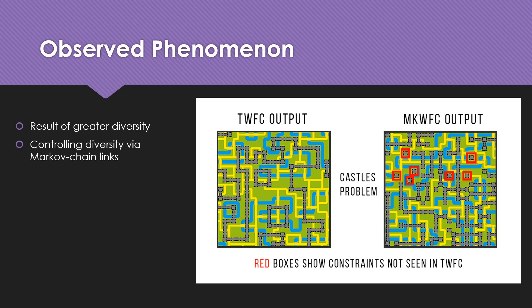By controlling Markov chain links, we can also control the diversity. We were able to prove that the Markov chain wave function collapse model is able to identify significantly more constraint pairs compared to TWFC.